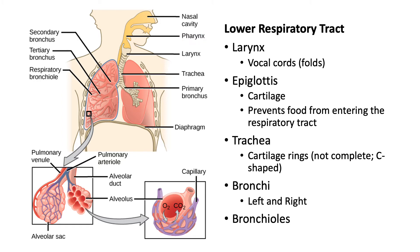Let's continue down to what we would consider the lower respiratory tract. The larynx is the division — we're now in the lower respiratory system at the point of the larynx. The larynx, you might call it in common terms your voice box. This is where sound is produced, because the vocal folds or vocal cords are found here. The larynx is this bulging-looking area, and what you see in the front shown in gray is cartilage present as protection over the vocal folds. There are several cartilages there.